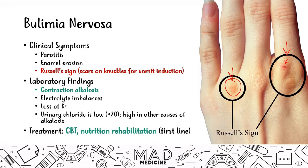Treatment for bulimia includes cognitive behavioral therapy as first line, to help the patient understand their body is normal, combined with nutrient rehabilitation. SSRIs can also be used to treat underlying conditions like OCD or body dysmorphic disorder. The mainstay for both anorexia and bulimia is cognitive behavioral therapy combined with nutrient rehabilitation.